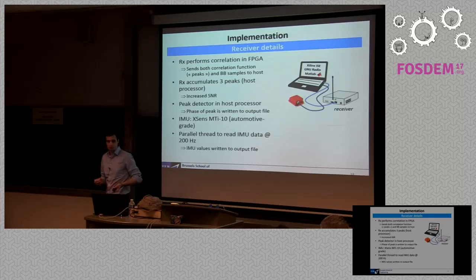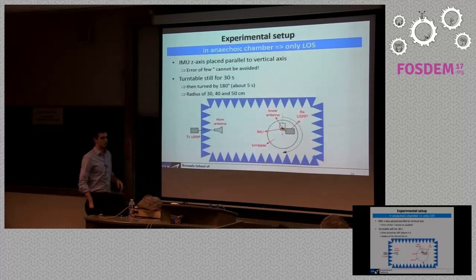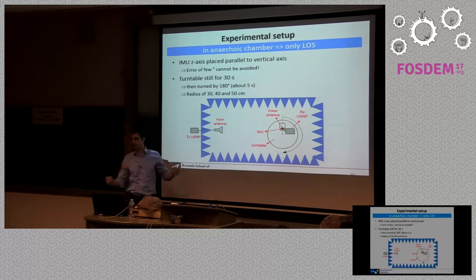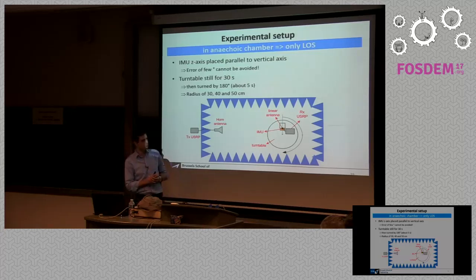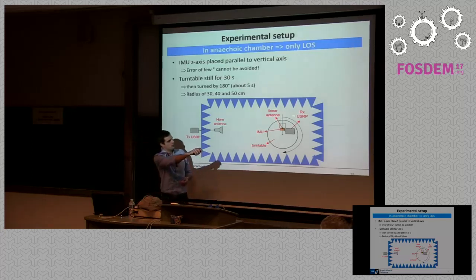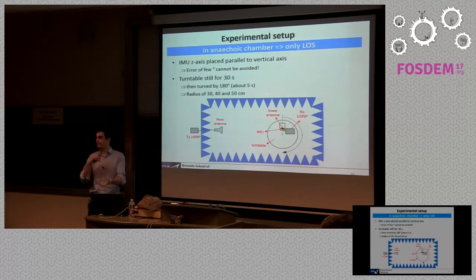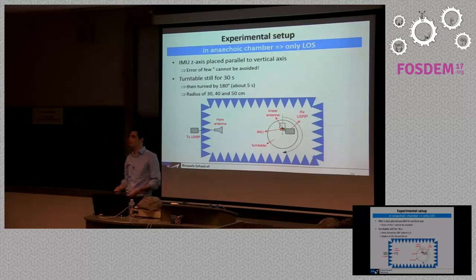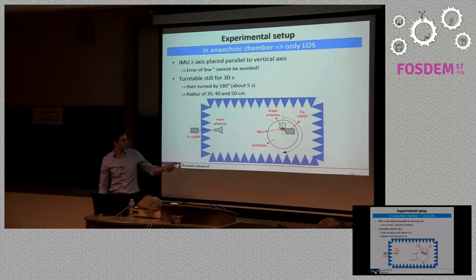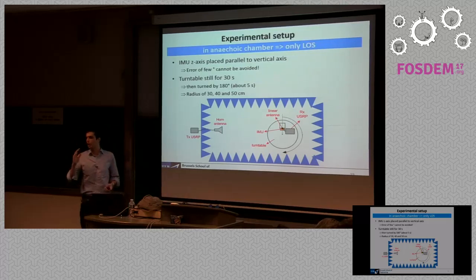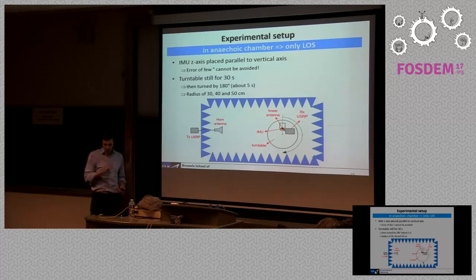To test whether all this theory actually works, we go to an anechoic chamber for a clean, controlled environment. There's no multipath, which is ideal when trying something for the first time. Importantly, we use the turntable of the anechoic chamber — normally used to turn antennas in all directions to measure radiation patterns. We use the turntable to generate a known movement: a semicircle at a known distance from the center, giving us a very controlled, reproducible movement.